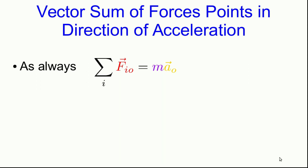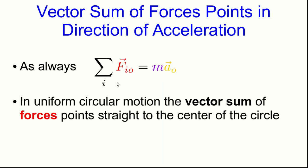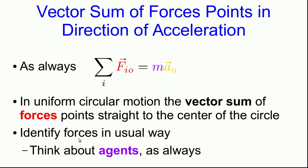Now we can draw a further conclusion using things we've seen before. The equation of motion still applies, and so as always, the vector sum of forces must be ma for the object. We've seen that this acceleration points straight to the center of the circle if an object is going around a circle at constant speed, and that this acceleration magnitude is constant. So in uniform circular motion, the vector sum of all the forces acting on the object must be straight to the center of the circle, and furthermore, the magnitude of the vector sum must be constant. Notice there's no new special force that comes up because an object is going in a circle. We still have to identify forces in the usual way — think about all the agents that can exert forces on the object. What we know now is that the vector sum of the forces has to be to the center of the circle in uniform circular motion.